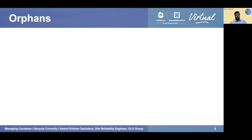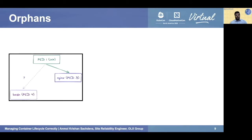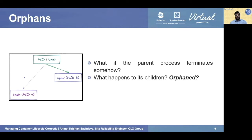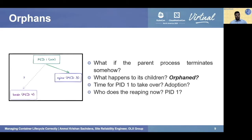What happens if a process loses its parent? Consider PID4, a child of PID2, but PID2 has been terminated. PID4 is now called an orphan process because it has no parent. In Unix systems, PID1 is responsible for re-parenting the orphan to itself. So PID4 will become a child of PID1 through re-parenting.